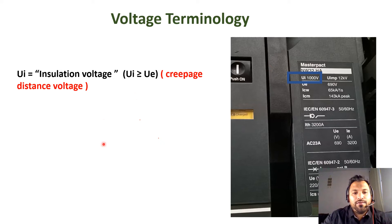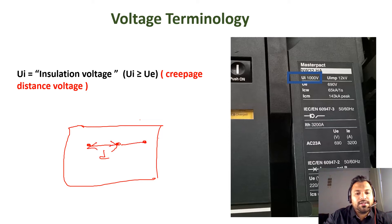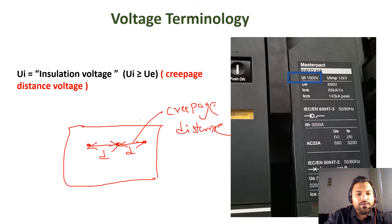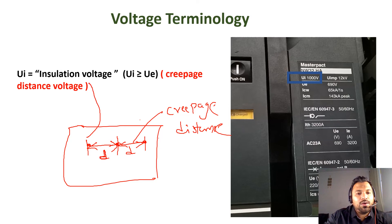Let me explain the Ui value with a simple concept. Inside the circuit breaker, there are terminals, and between those terminals a certain distance must be maintained — this is called the creepage distance. When a certain amount of voltage is applied across this distance and the insulation remains intact with no malfunction, the voltage at which this holds is called the insulation voltage or creepage distance voltage. This value is determined from that physical distance.